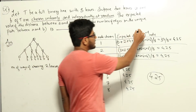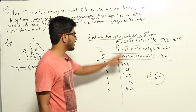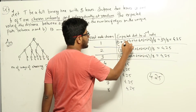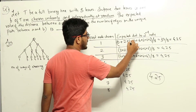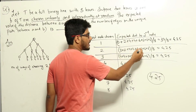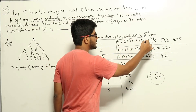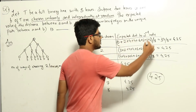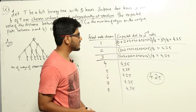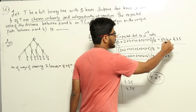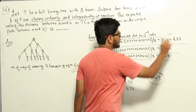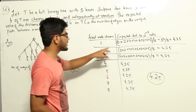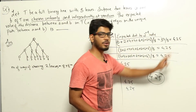Therefore the expected distance to the second node is: in one case we got 0, in one case we got 2, in two cases we got 4 (so 4 + 4), and in four cases we got 6 (so 6 + 6 + 6 + 6). Each of these is equiprobable, so we divide by 8: (0 + 2 + 4 + 4 + 6 + 6 + 6 + 6) / 8 = 34/8 = 4.25. So if the first node chosen is 1, the expected distance to the second node is 4.25.